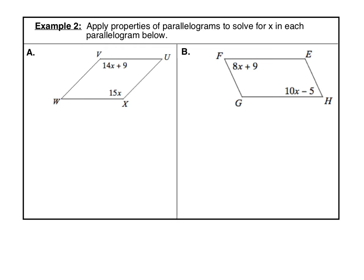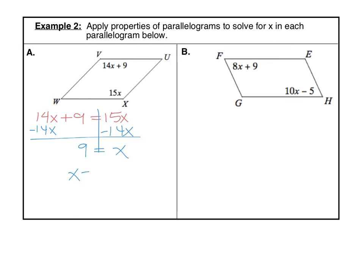Let's practice this property. We're going to apply properties of parallelograms to solve for X. In problem A, angle V equals 14X plus 9 and angle X equals 15X. Those are opposite angles, so they have to be congruent: 14X plus 9 equals 15X. Subtract 14X on each side to get 9 equals X. So X equals 9.